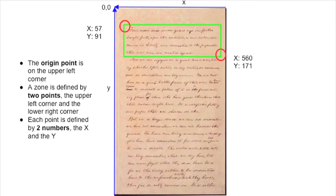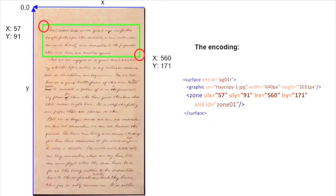Once you have recorded the coordinates, you put them into those attributes we mentioned. The upper left corner of your rectangle — which is 57, 91 — goes into ULX (upper left X): 57, and upper left Y: 91. While the second corner, the one on the bottom right, goes into LRX (lower right X): 560, and the LRY (lower right Y): 171.